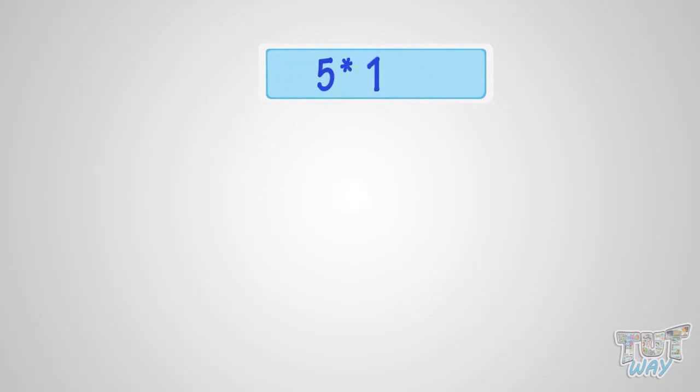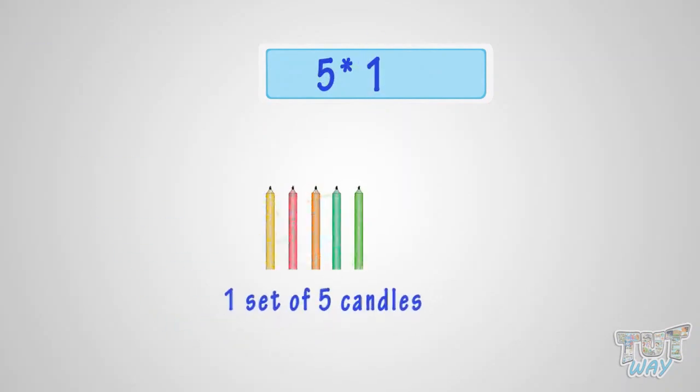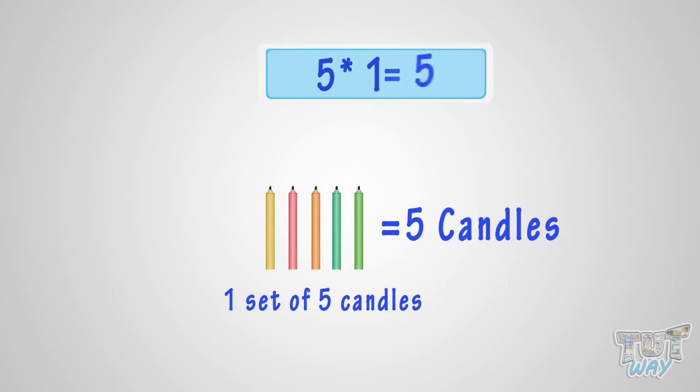What is 5 multiplied with 1? It is the same as one set of 5 candles. So, it is 5 candles. That is, 5 multiplied by 1 is 5.